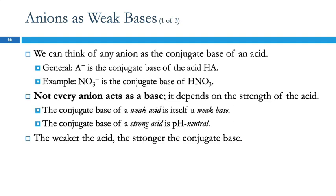Any anion can be thought of as the conjugate base of an acid. In general terms, we think of A minus as being the conjugate base of the acid HA — the acid loses a proton and becomes this anion. A specific example would be nitrate ion: nitrate ion is the conjugate base of nitric acid. A conjugate acid-base pair differs by one proton. We can think of any anion as the conjugate base of an acid, but not every anion will actually act as a base — it depends on how strong that acid is. If it's the conjugate base of a weak acid, it will be a weak base. If it's the conjugate base of a strong acid, it's going to be pH neutral. The weaker the acid, the stronger the conjugate base.